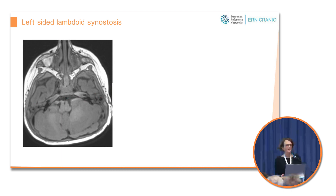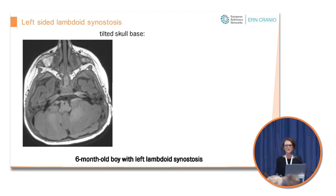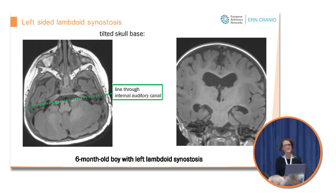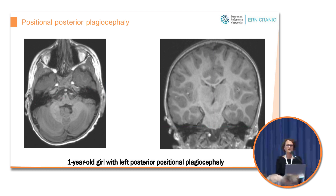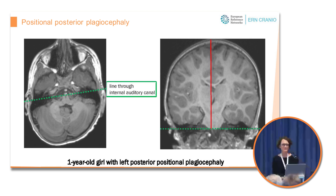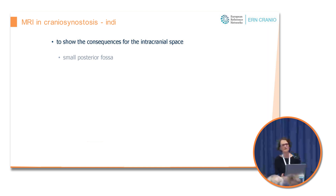I also find it very helpful to draw a line through the internal auditory meati to differentiate these two types of posterior plagiocephaly. The perpendicular line would deviate from the supratentorial midline in the direction of the lambdoid synostosis, whereas it is straight in positional plagiocephaly. So what are the indications to do an MRI in these patients?